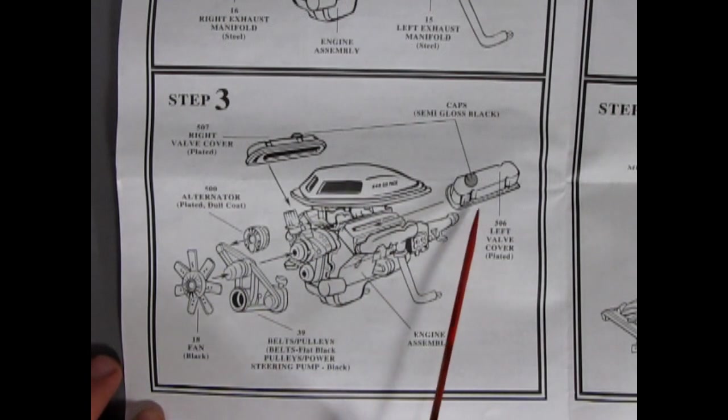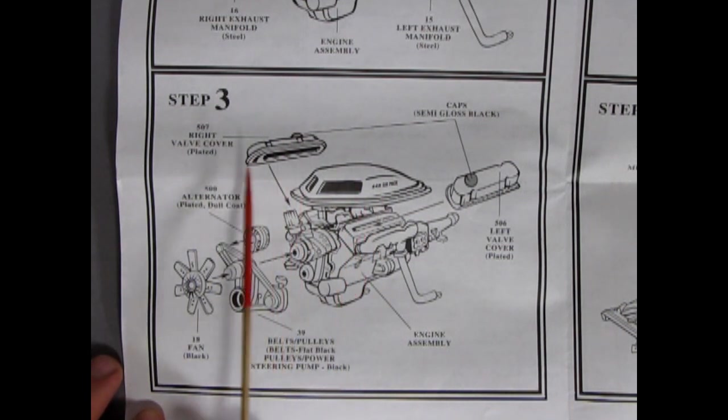Now step three shows our valve covers going on after, of course, you glue on your shaker hood scoop. And then the front belts and there's also a power steering pump molded in place and our alternator and our fan. So once all this is together, you have your nice 440 six-pack.